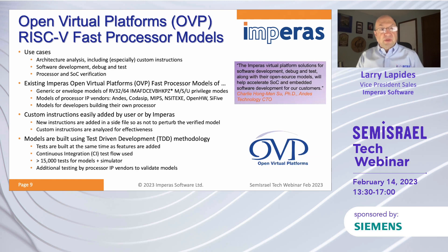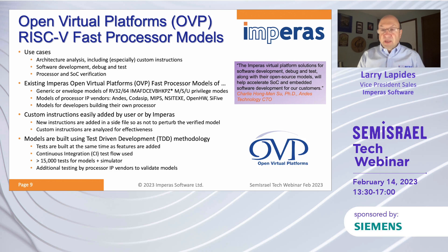With those models, we're supporting the three use cases and the full specification. We have models of the processor IP vendors and models for developers building their own RISC-V processor. Custom instructions are easily added by users or by Empiris, and those new instructions are added in a side file so as not to perturb the verified model. That base model gets used in all of our RISC-V models, with well over 100 users using that base model.